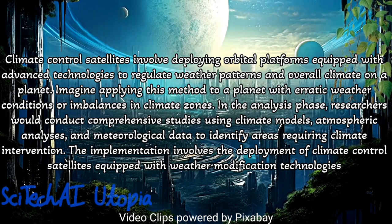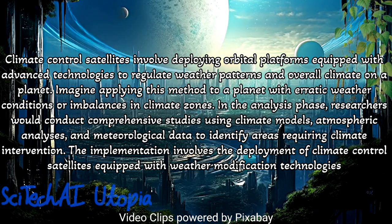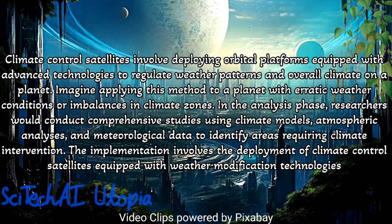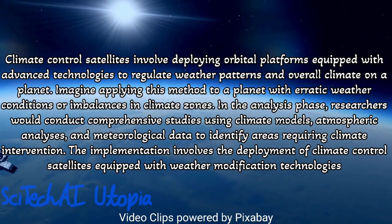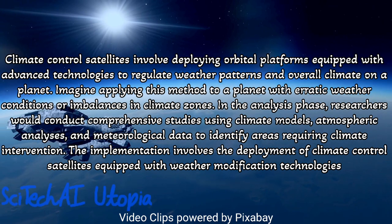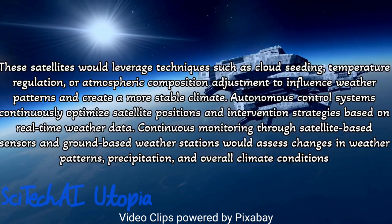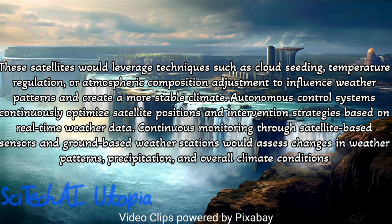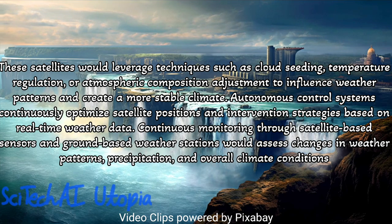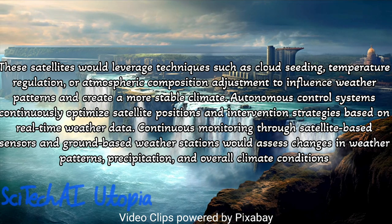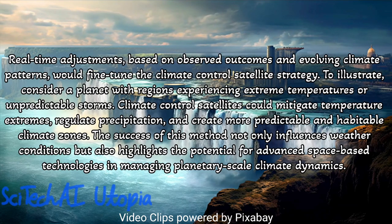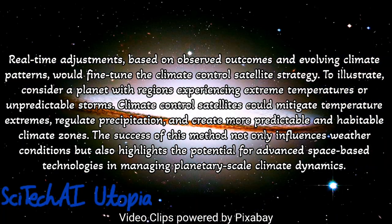Method 30: Climate Control Satellites. Conduct a thorough analysis of the target planet's climate patterns, atmospheric composition, and temperature variations to inform the design of climate control satellites. Develop satellite-based technologies capable of influencing weather patterns, regulating temperatures, or mitigating extreme conditions through controlled interventions. Implement advanced orbital dynamics calculations to optimize the placement and trajectories of climate control satellites, ensuring precise targeting and adaptability to changing planetary conditions. Incorporate real-time monitoring and feedback systems utilizing satellites, sensors, and ground-based weather stations. Address potential ethical considerations and unintended consequences, incorporating adaptive management strategies to prioritize environmental sustainability.